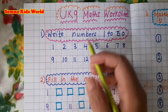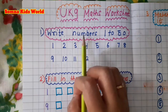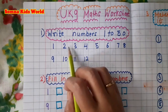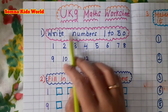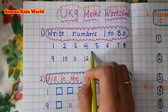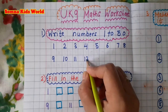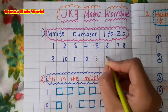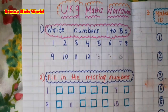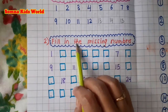The first exercise is: write numbers from 1 to 50. So what you have to give is — write numbers 1 to 50: 1, 2, 3... like this. After that you can tell the kids to write 12, 13, 14, 15, and so on.